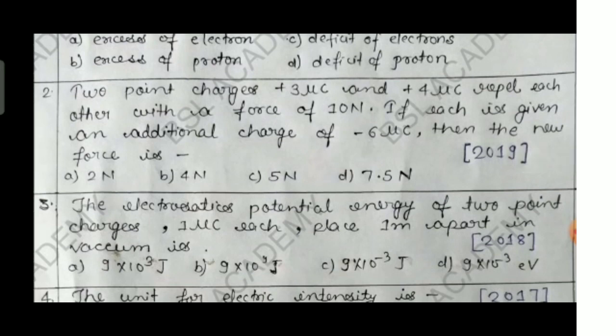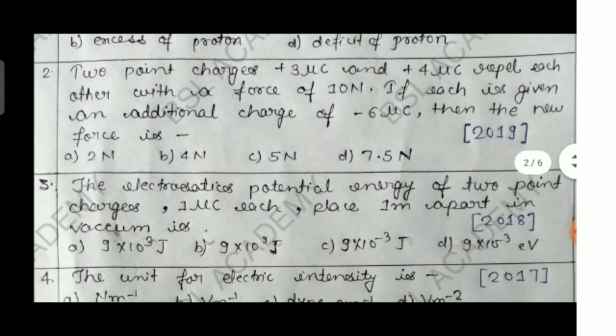Question two: two point charges, plus three microcoulomb and plus four microcoulomb, repel each other with a force of ten Newtons. If each is given an additional charge of minus six microcoulomb, then the new force is — option A: two Newtons, option B: four Newtons, option C: five Newtons, option D: seven point five Newtons. This was asked in 2019.